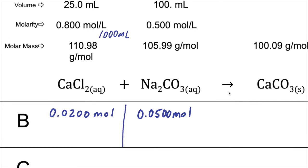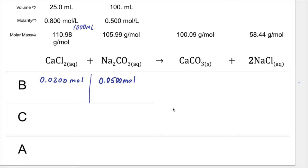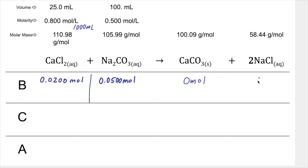Now we know how many moles of each reactant are available. My students calculate how many grams of solid calcium carbonate they would produce in the lab — they collect the solid, rinse it, and measure it. On BCA charts I like to check for conservation of mass, so I'll also figure out how many grams of each solute are available. We multiply the mole amount by the molar mass to find grams.